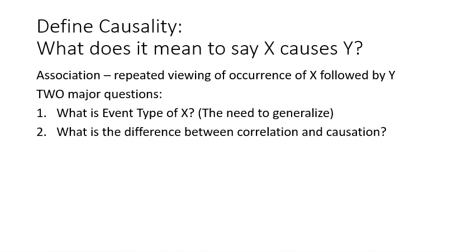The second question, which is also very important, is that if we see event A being followed by B many times, this is just a correlation. How do we know that event A is actually the cause of event B? So these two questions arise when you want to study or define causality.